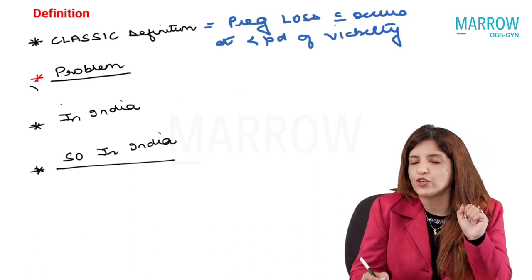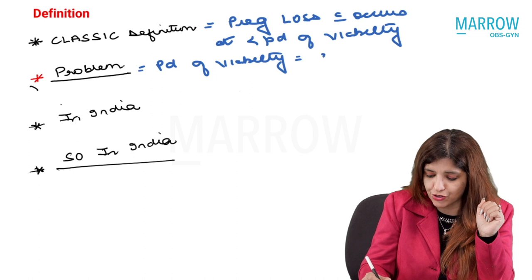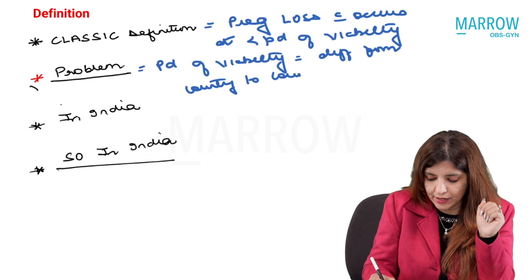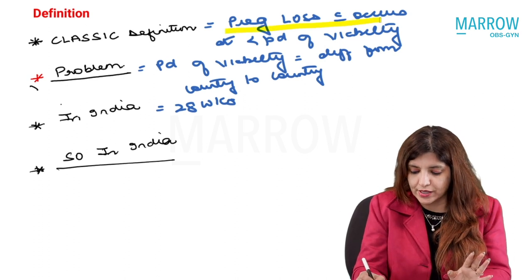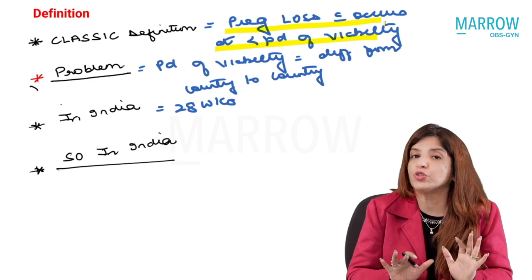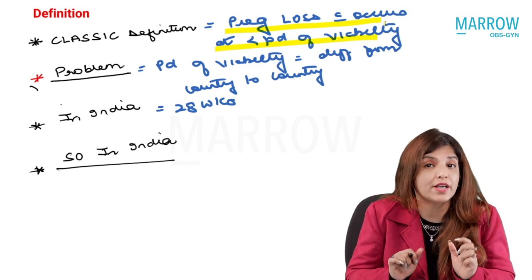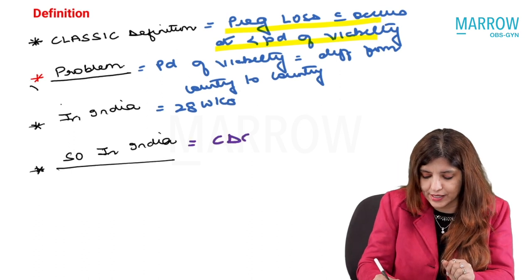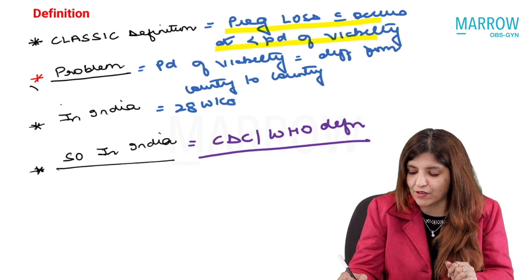The problem with this definition of abortion is that the period of viability is different from country to country. If we talk about India, the period of viability is 28 weeks. So if we go by this definition, pregnancy loss happening at less than 28 weeks would be abortion, meaning pregnancy loss at 27 weeks or 26 weeks would also be considered abortion — but that is not so. In India what we follow is the CDC or the WHO definition.